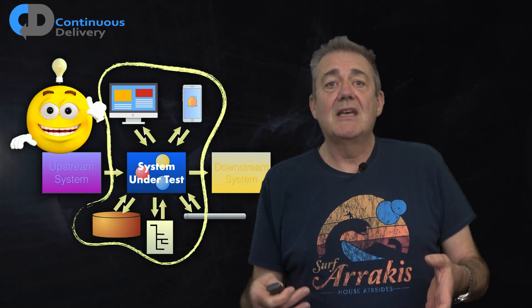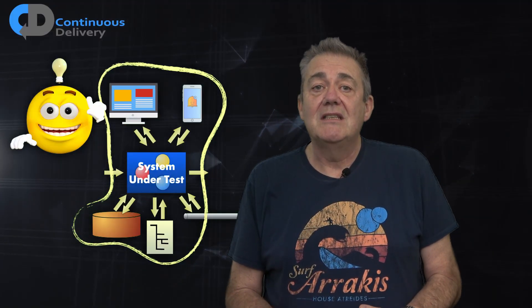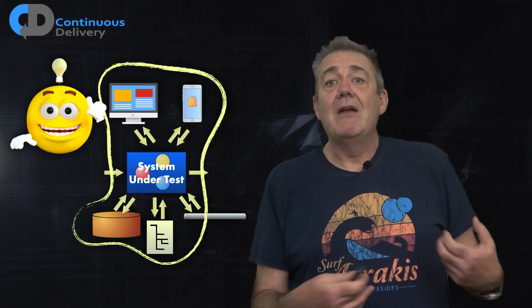So in this case, the upstream system and the downstream system are outside the scope of our testing, so we should get rid of them.